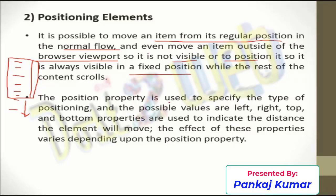The position property is used to specify the type of positioning — that means what type of positioning you want. The possible values, when you are going to define positioning, should use left, right, top, and bottom properties. These properties indicate the distance the element moves from one place to another.